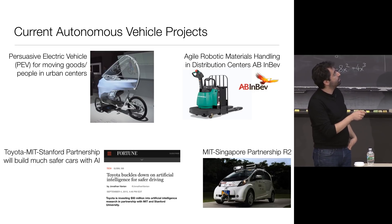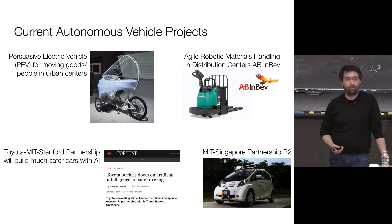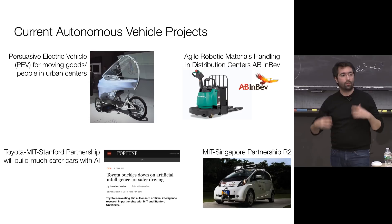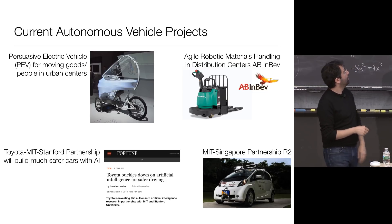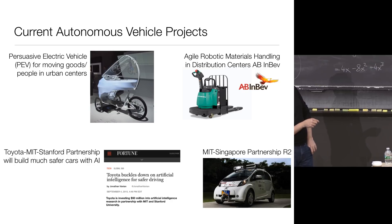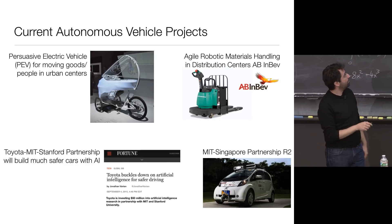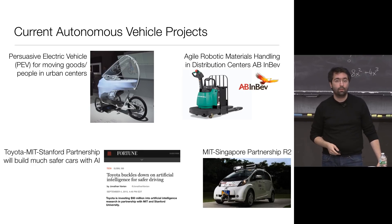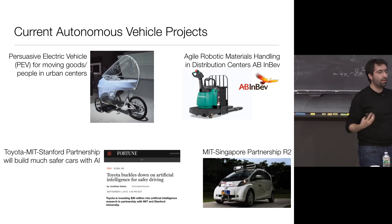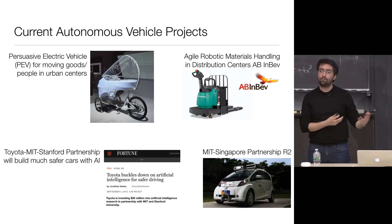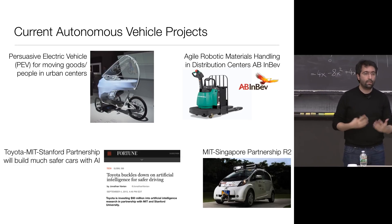We also have a robot in AB InBev's warehouses — a warehouse robot that's easy to interact with, similar to Rethink Robotics. You can talk to it, tell it what to do, show it things. I'm also a lead PI working with Daniela Rus on MIT's effort with Stanford and Toyota to build safer vehicles. And I'm still a PI on the MIT-Singapore partnership — we've moved from golf carts to electric vehicles, and we're working on an autonomous wheelchair as well.